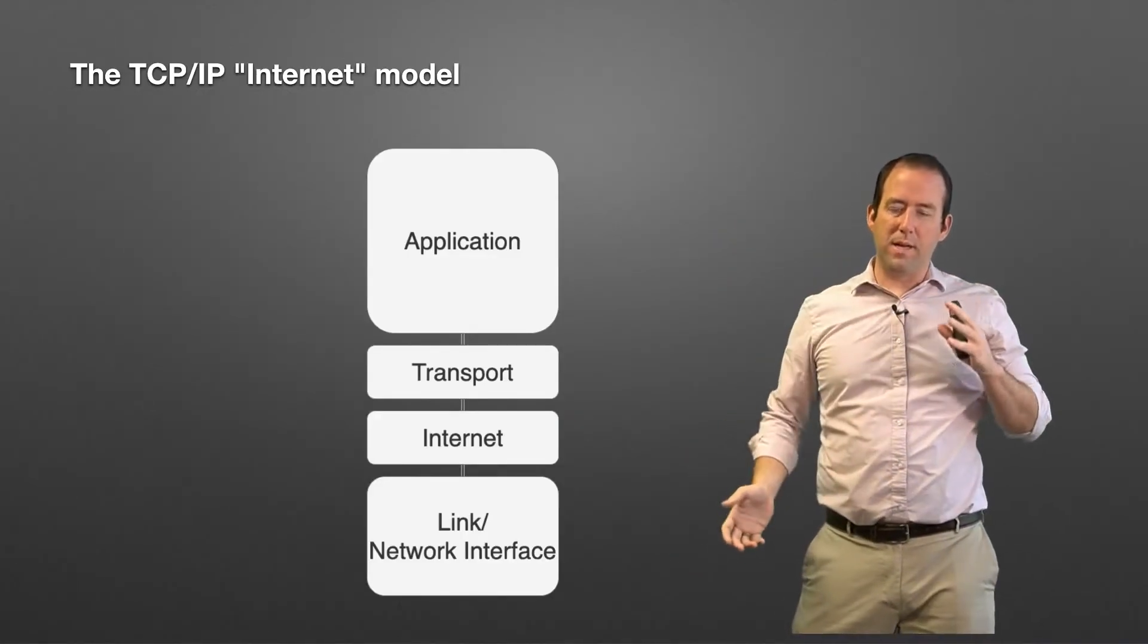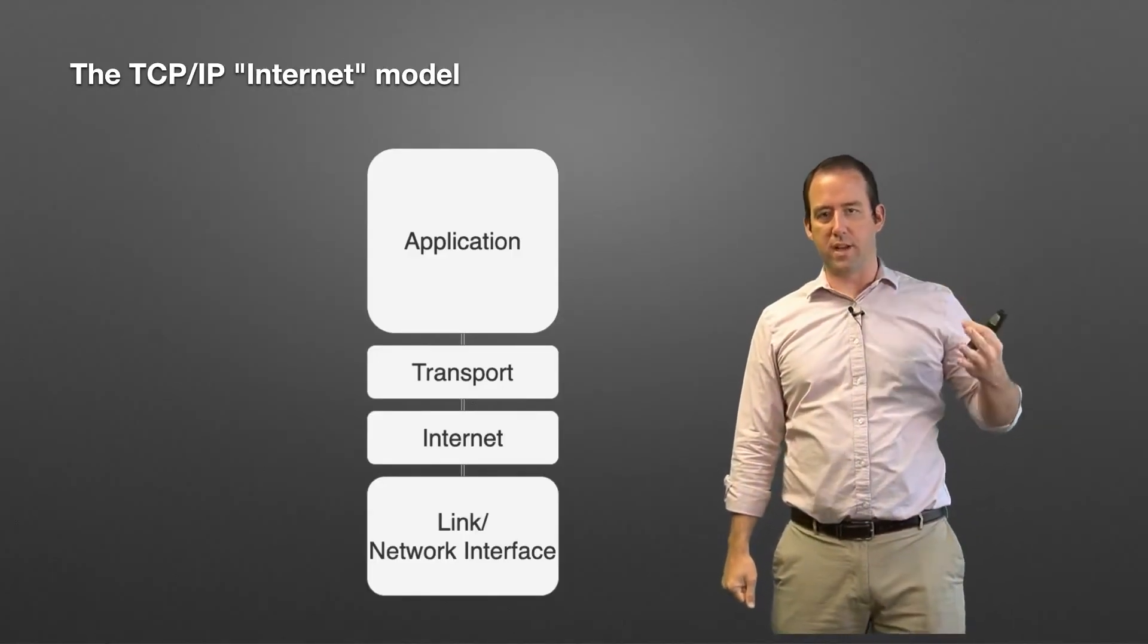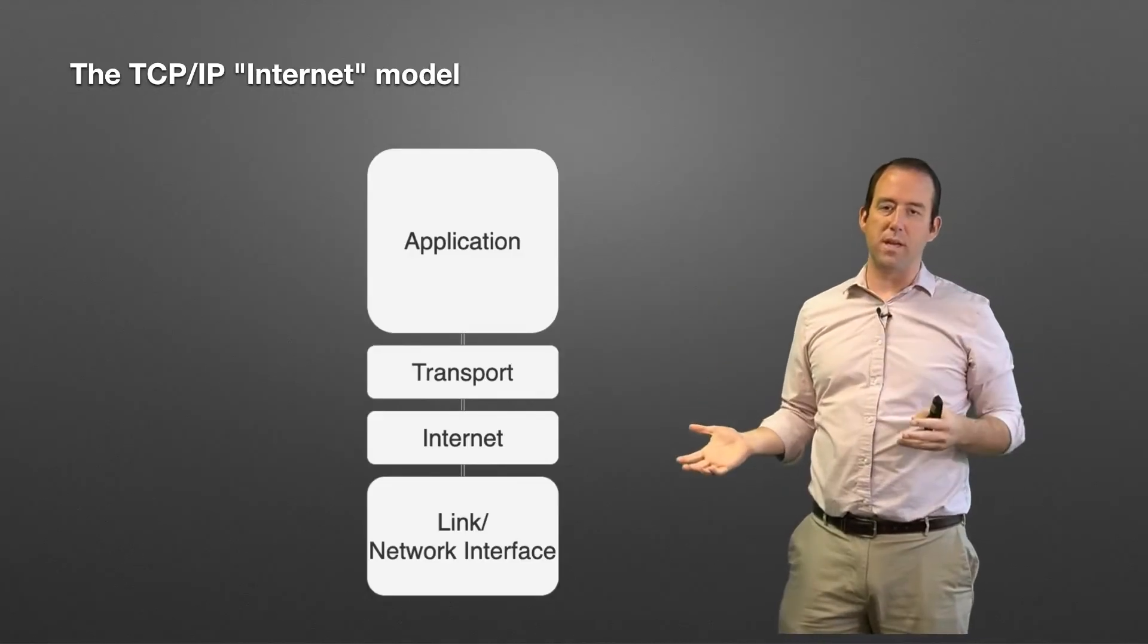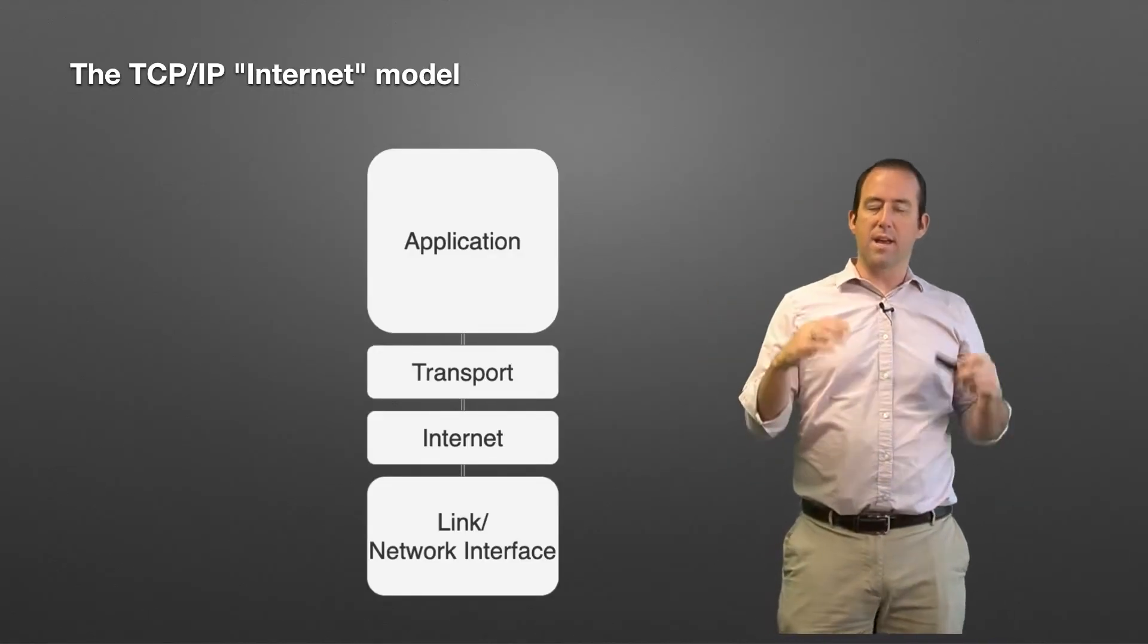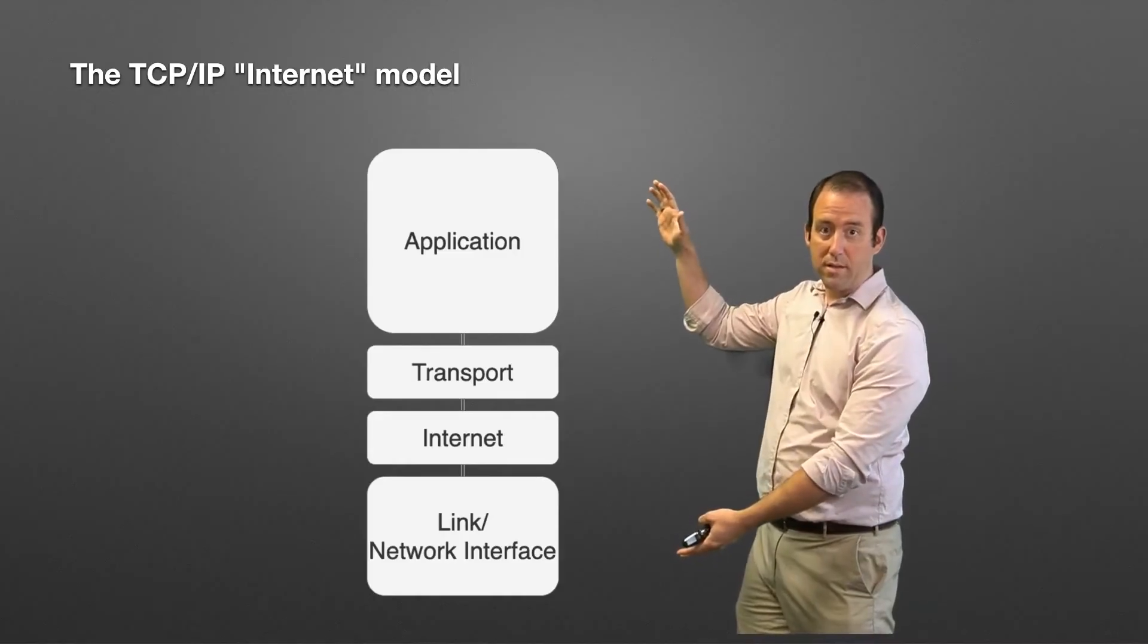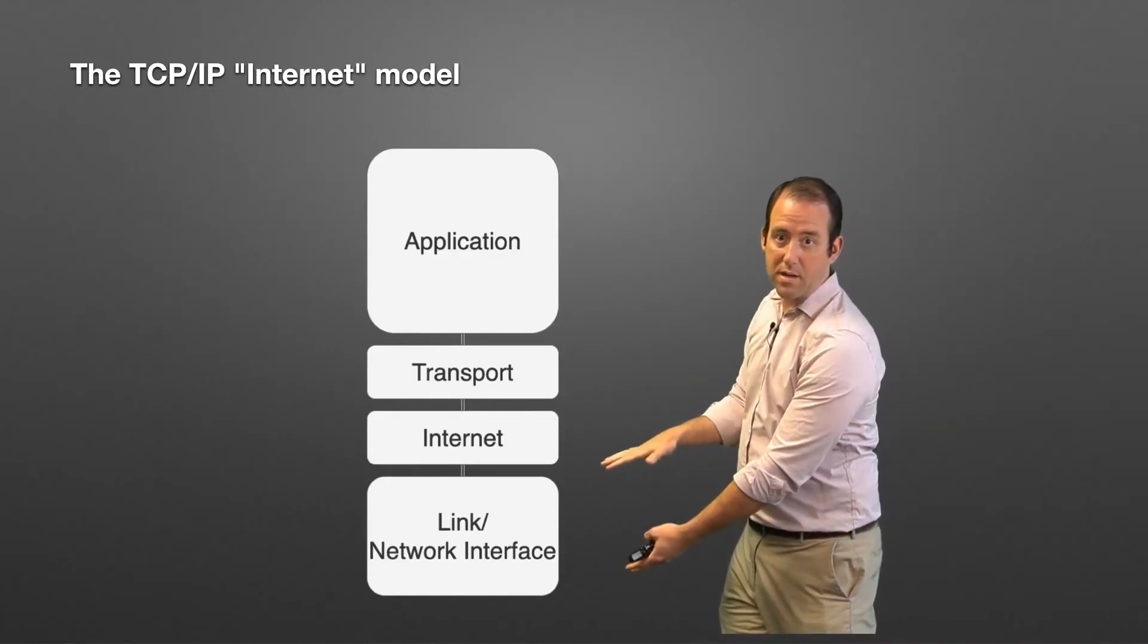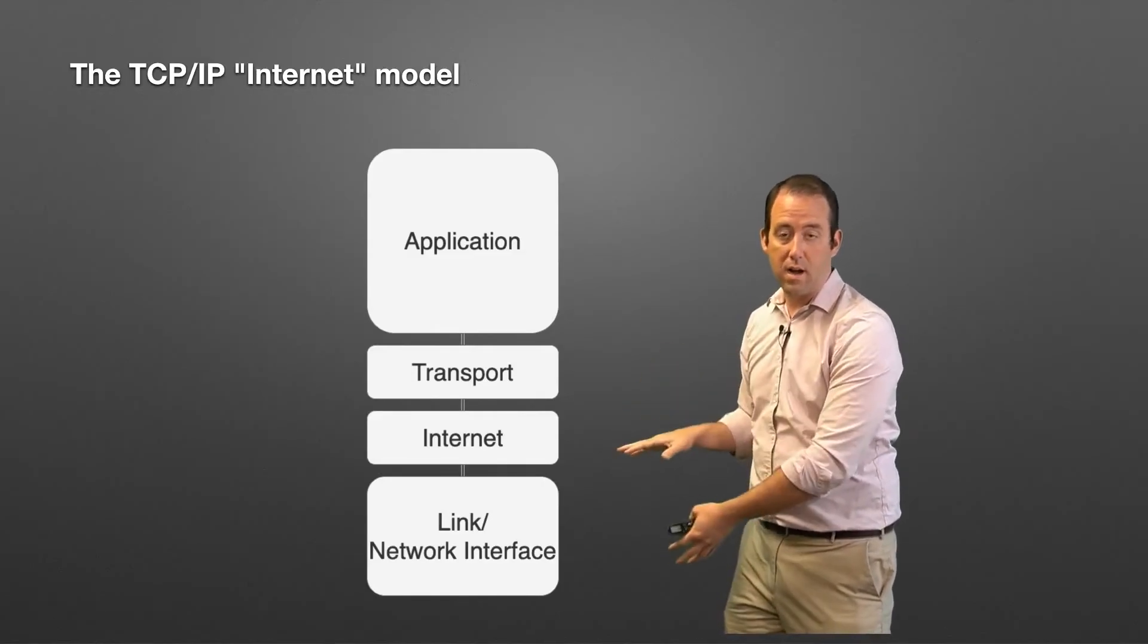But the problem is we still like to talk about layer one, layer two, layer three. That language got into networking before we had the TCP/IP internet model. So the language of layer one, layer two, layer three stuck. And as a result, this beautiful four-layer model - well, layer one and layer two, if you remember, are down here. The network interface, the link layer, the physical layer, all that stuff.